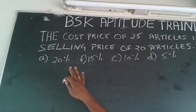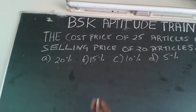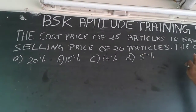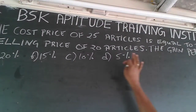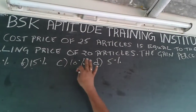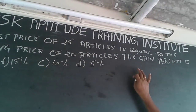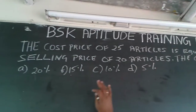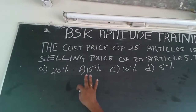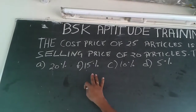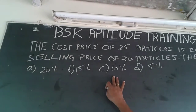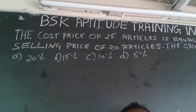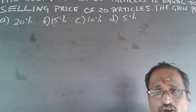The question I am going to handle now is: the cost price of 25 articles is equal to the selling price of 20 articles. The gain percentage is: (a) 20%, (b) 15%, (c) 10%, (d) 5%.